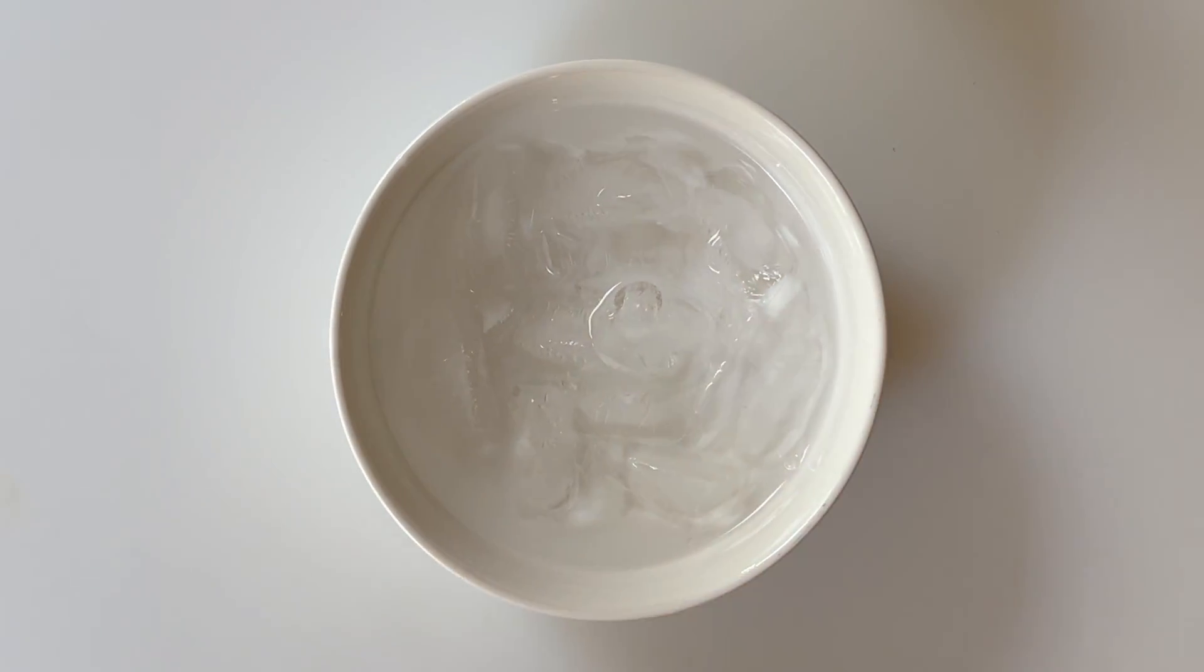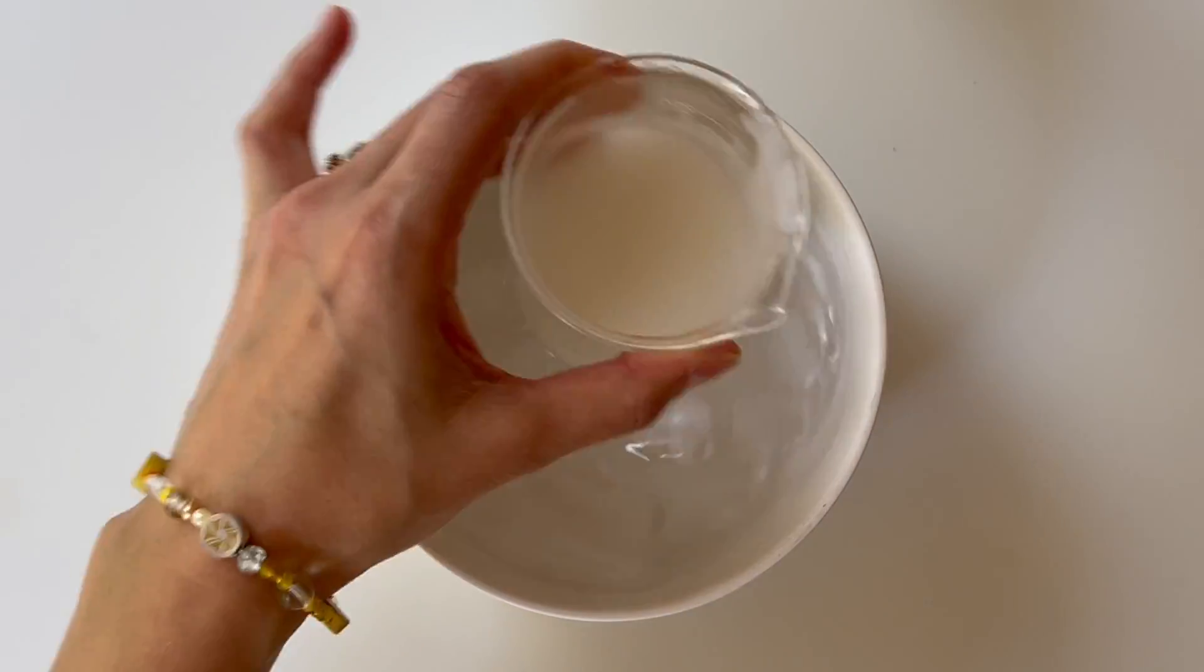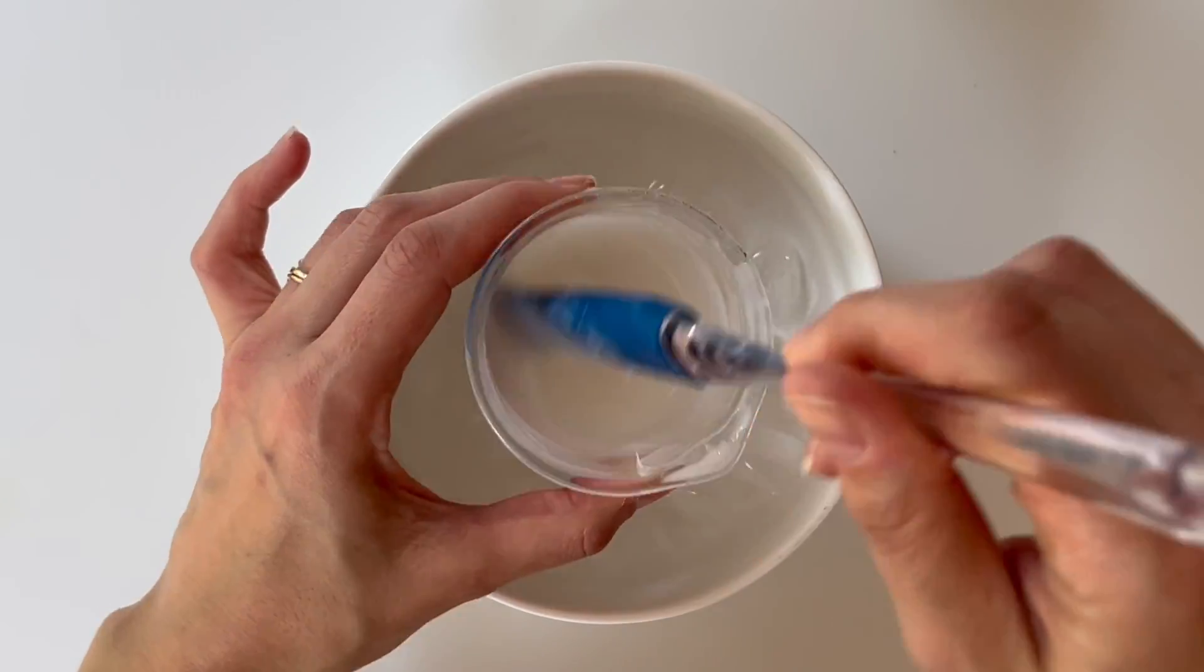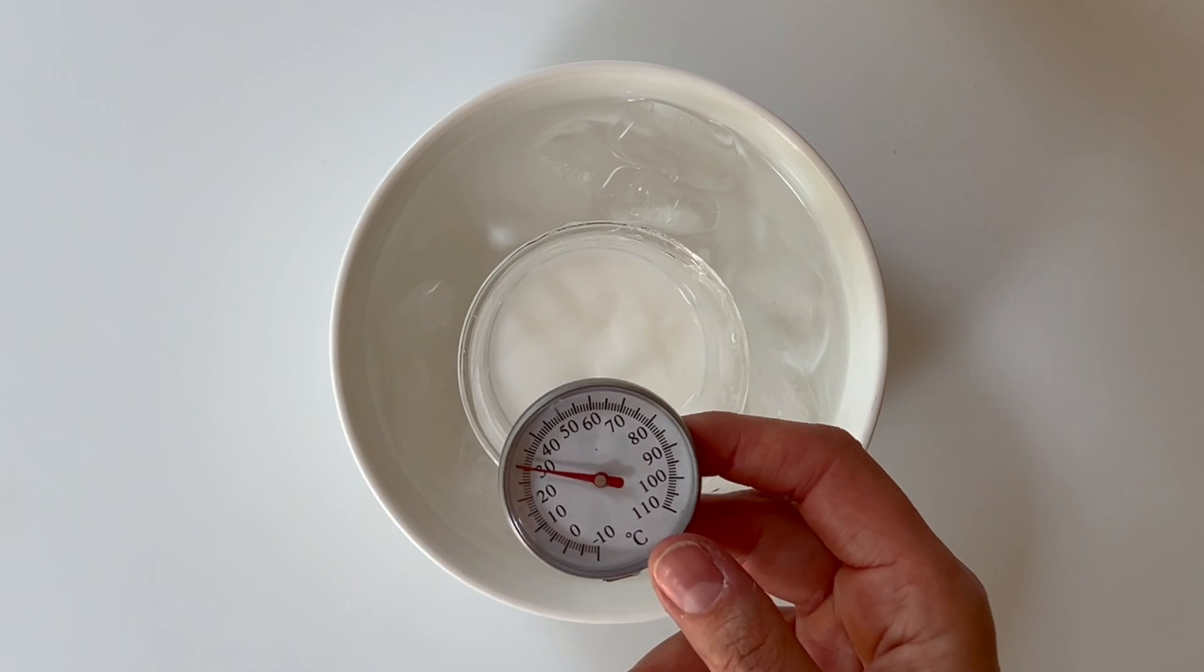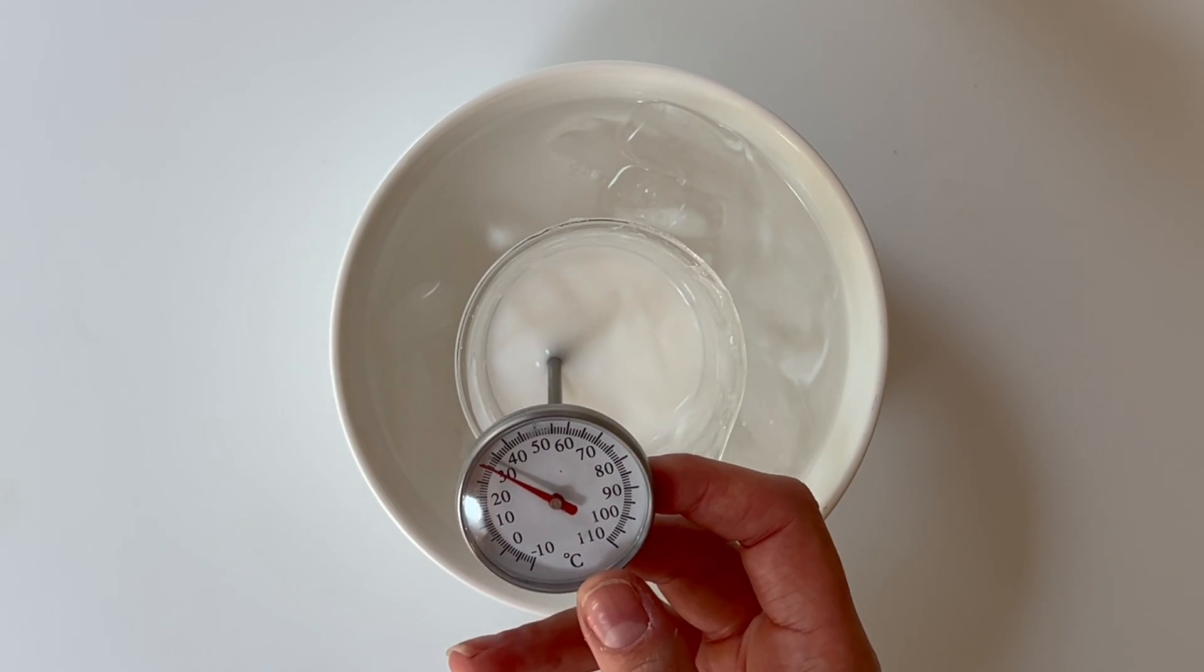To speed up the process, I've created an ice bath which you can put your formula in and mix it until it starts to thicken. Once it's cooled to below 40 degrees, we're going to add our phase D ingredients.